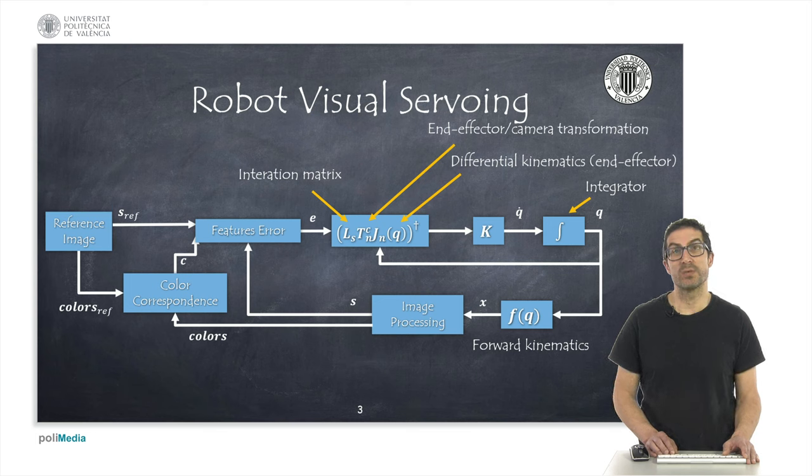we can relate velocities in the image plane with joint velocities. A proportional controller is responsible for determining the actual joint velocities, so that the error converges to zero using the pseudo-inverse of the Jacobian.